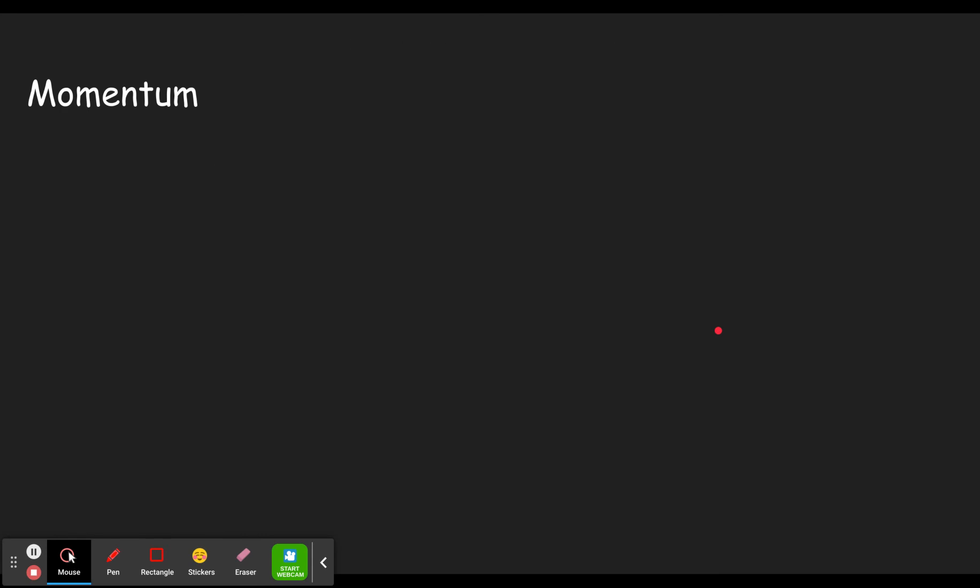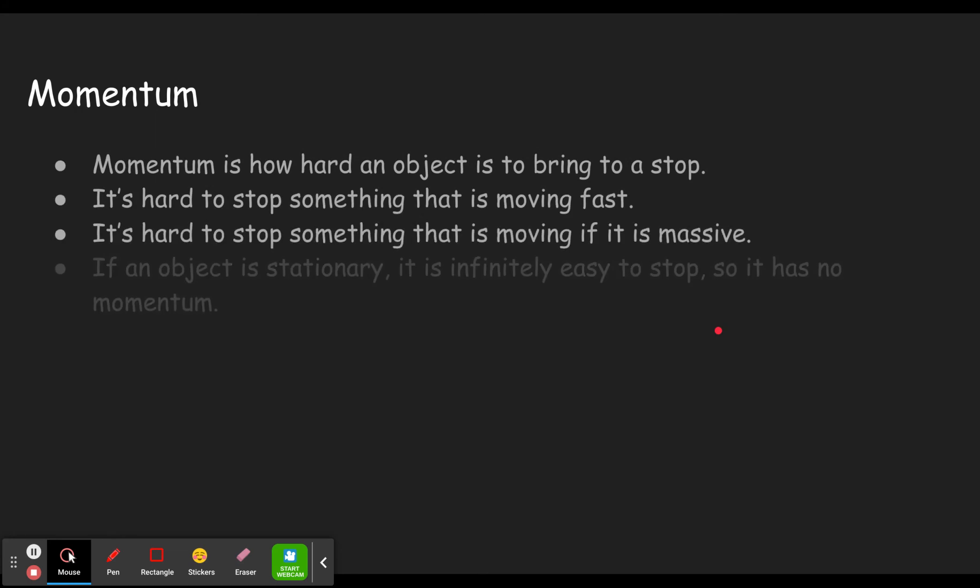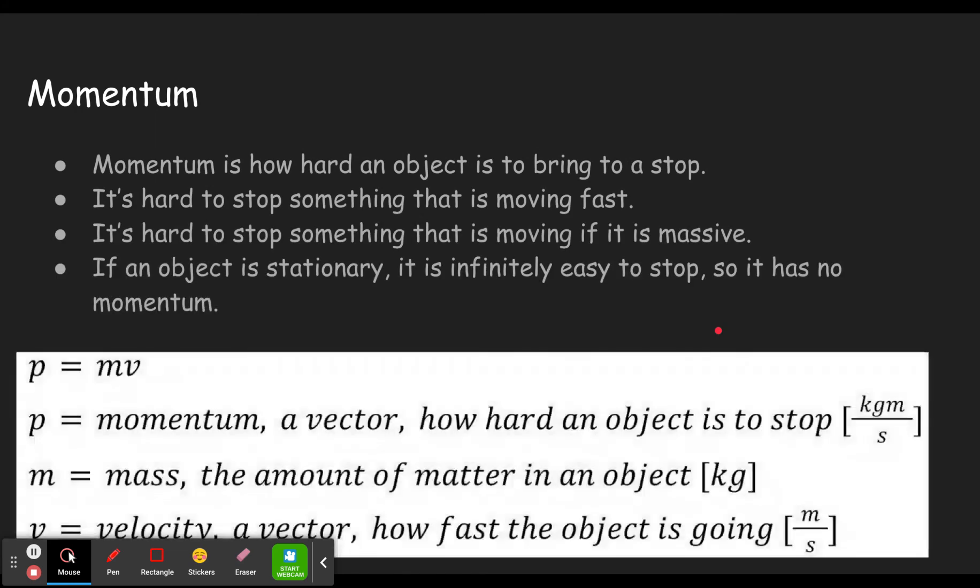So first you should have gone through momentum. I'll link a video here where I went through momentum. Momentum is how hard an object is to bring to a stop. If it's moving faster, it's big, it's got momentum. Momentum is mass times velocity. We're going to do that a few times during this activity.